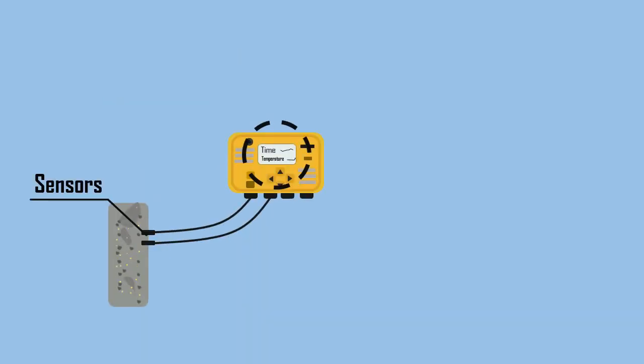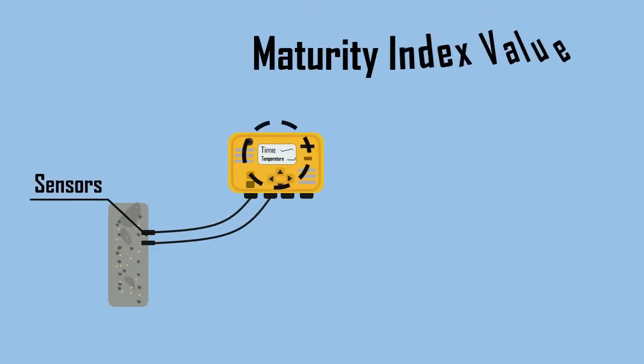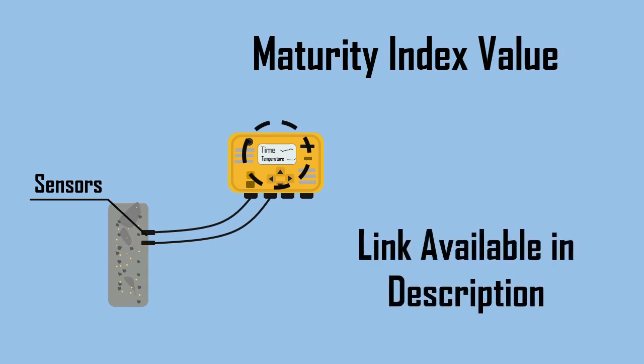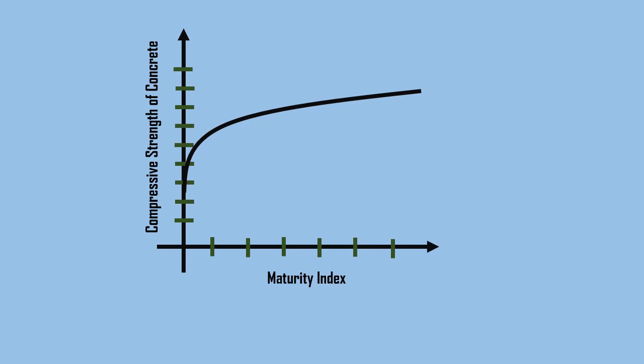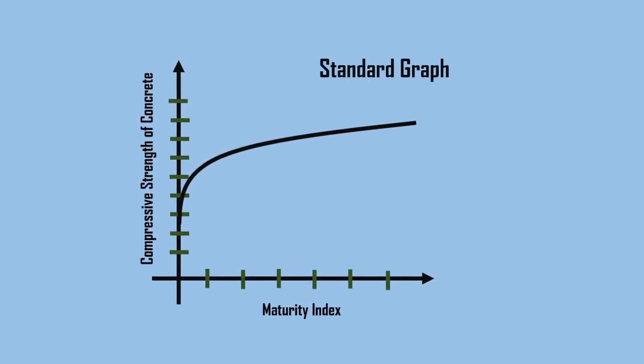With the help of time and temperature recorded, the maturity index value is calculated. To know about this, refer to the video link given in the description. Now draw the graph considering maturity index on the x-axis and compressive strength on the y-axis. This graph is considered as a standard graph for this concrete.